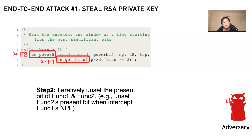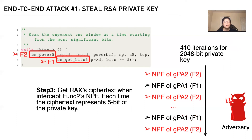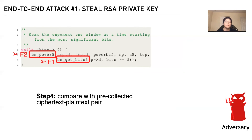The adversary then unsets the present bit of both functions, intercepting their nested page faults. Due to the while loop, the adversary observes a total of 410 iterations of nested page faults for a 2048-bit RSA private key. They capture the RAX ciphertext when intercepting function 2's nested page fault — the moment bn_get_bits_5 finishes and is about to return. Each ciphertext represents 5 bits of the private key. By comparing with the dictionary, the adversary recovers the 5-bit key segment each run, and after all 410 iterations, recovers the entire private key with 100% accuracy.